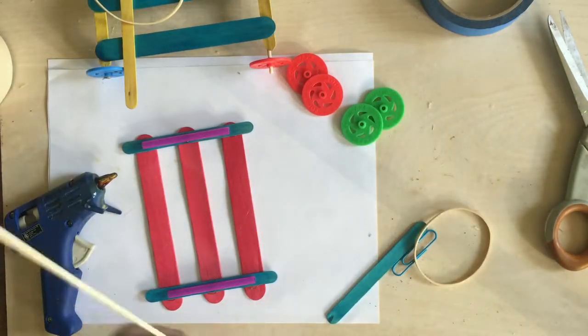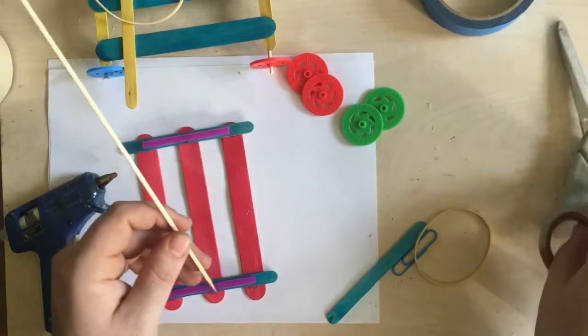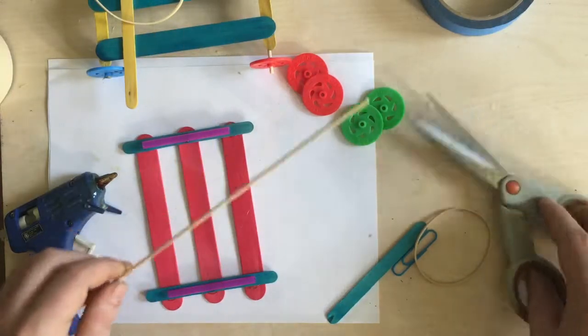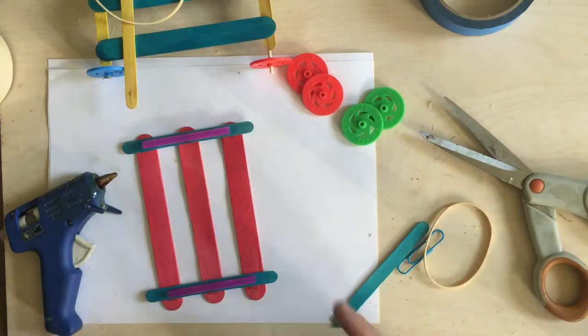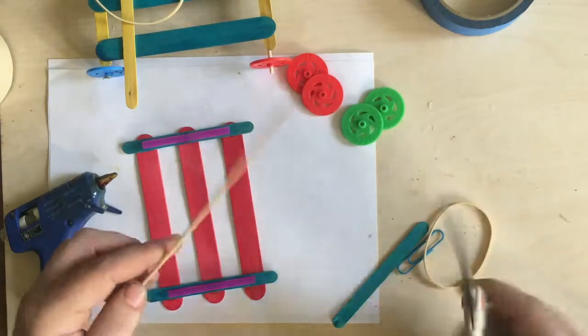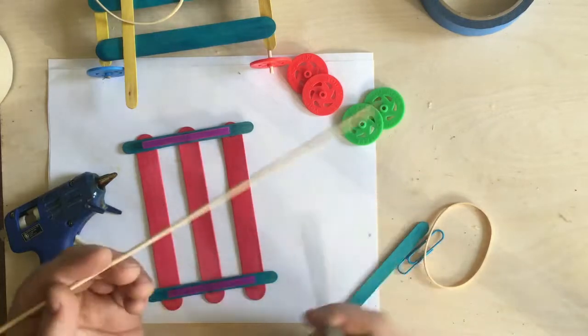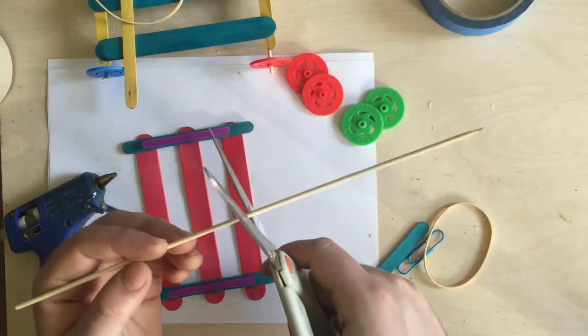Now I need to work with my wooden skewer here and make this a little bit smaller so that I can make two axles from it. Each axle will be just a little bit longer than this popsicle stick. So I'm gonna cut this in half. The way I like to cut this in half—it's very hard to cut it in half just with the scissors if you try to go through it.